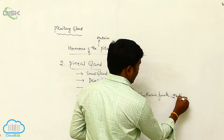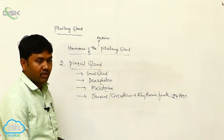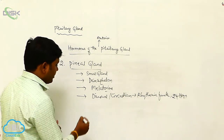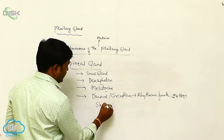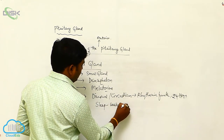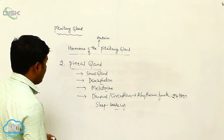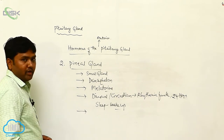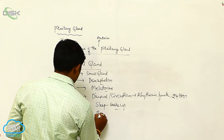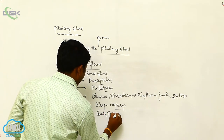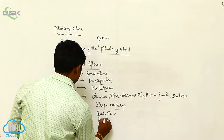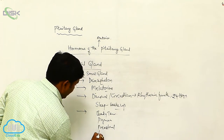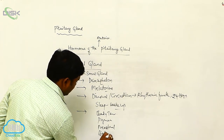In the 24-hour cycle, melatonin governs diurnal and circadian rhythmic functions, which include sleep and wake-up functions. It also controls and induces metabolic functions such as body temperature, pigmentation, and the menstrual cycle, as well as body defense mechanisms.